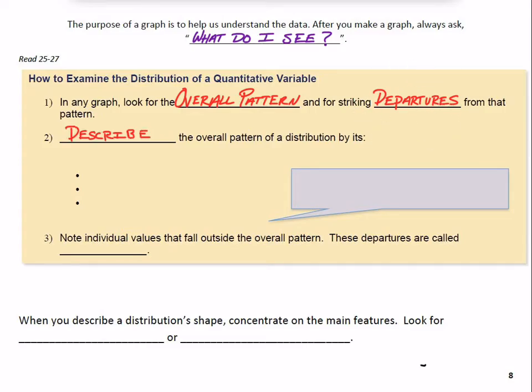Then, the second blank there, we need to describe the overall pattern of a distribution by three main characteristics. Those three things we need to speak to are the shape, the shape of the distribution, the center, where is the distribution centered at, and the spread. Loosely speaking, how wide is the distribution? So those three things, shape, center, spread, are three characteristics we need to speak to when we're describing the overall pattern of a distribution.